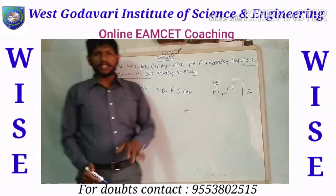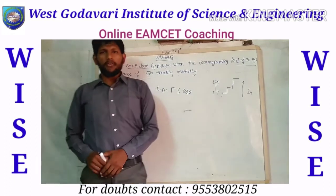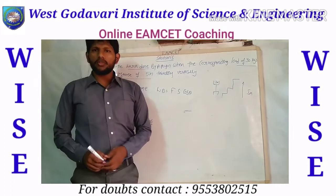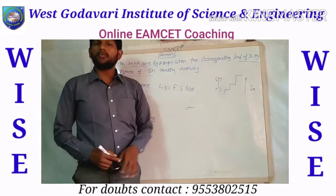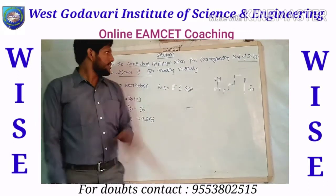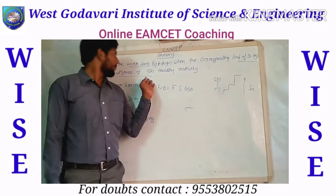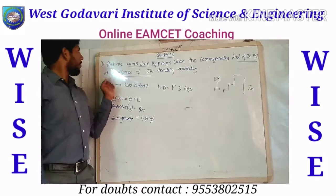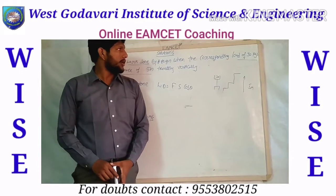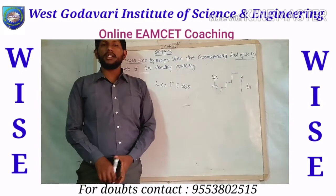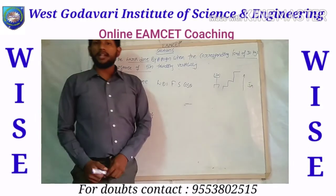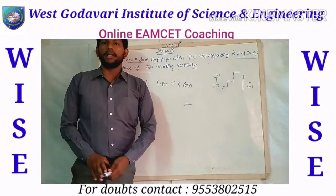In the previous class we discussed the concept of work. Now we are going to solve some problems from previous AMSET examinations. The problem we are taking: find the work done by a person when the corresponding load is 30 kg, traveling a distance of 5 meters vertically.